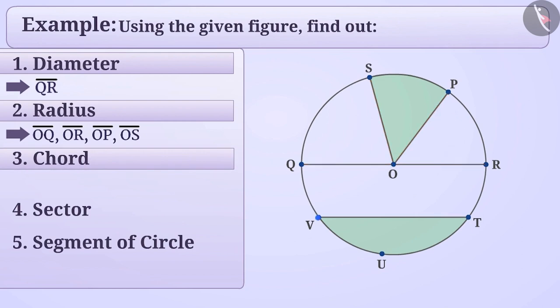A line segment connecting any 2 points on a circle is called a chord. In this circle, VT and QR are chords. Can you tell why QR is a chord when it is also a diameter? Come on, try.